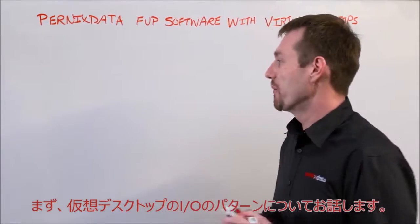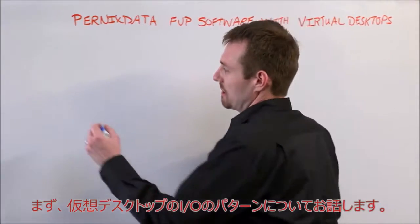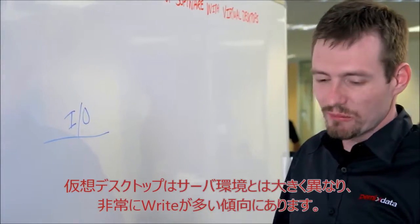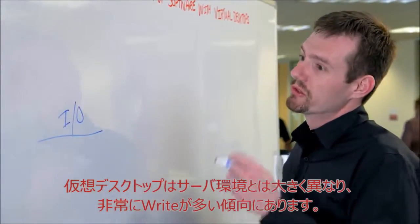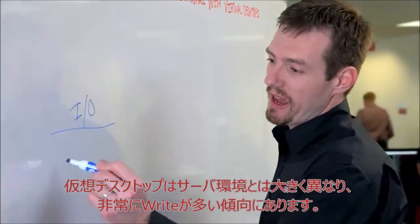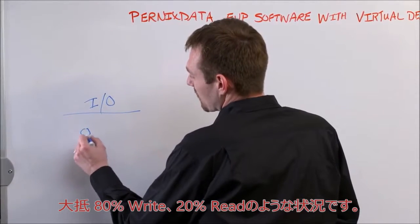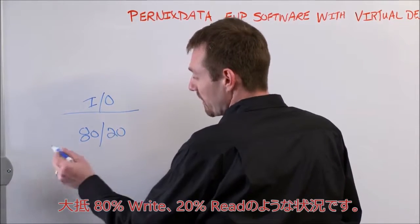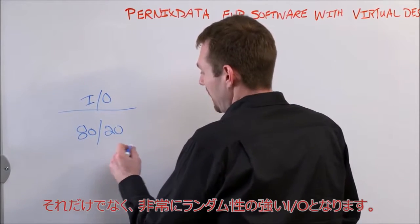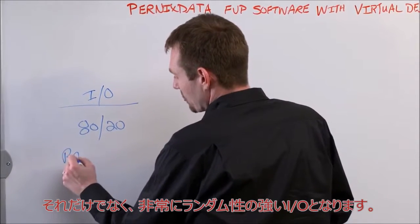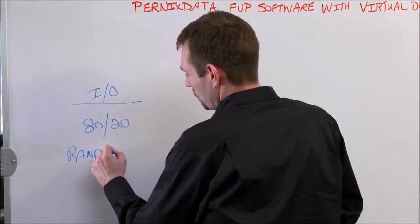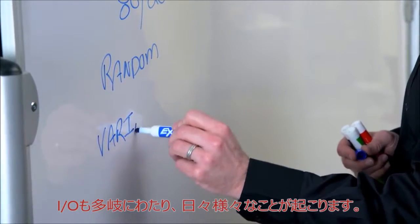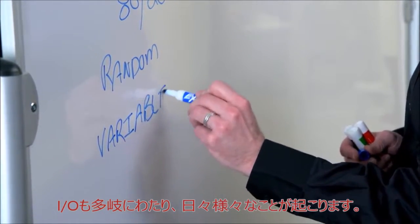Let's first talk about the I/O patterns of virtual desktops. Virtual desktops are very different from servers because they tend to be very write-heavy — typically something like 80% write, 20% read. Not only that, but they are also very random in nature and very variable as we talk about different things that happen throughout the day.